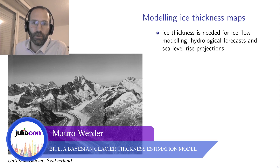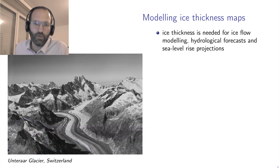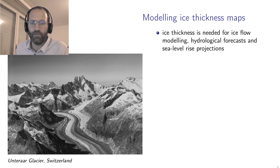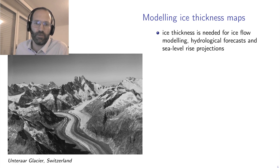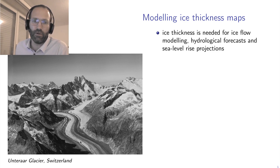So why should we model ice thickness of glaciers? Here is a photograph of Unteraargletscher in Switzerland. It flows down here — that is the glacier tongue. It's heavily debris covered, so it doesn't look quite so white and shiny as glaciers often do. How glaciers work is that there's more snowfall at the top than melt, so this snowfall accumulates, transforms into ice, and starts flowing down the mountain as a very viscous fluid. Eventually it gets into areas where melt is larger than snowfall, and so the glacier starts melting away.